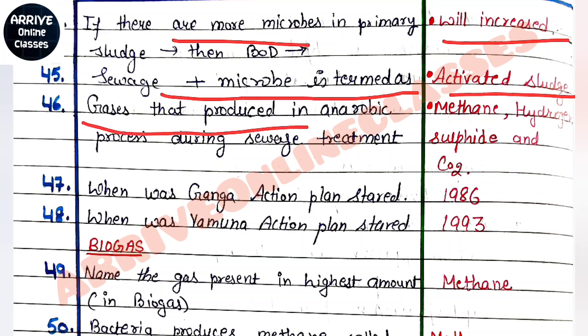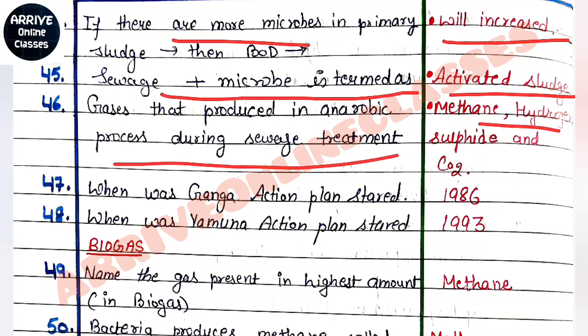Next question: what gases are produced during the anaerobic process of sewage treatment? The answer is methane, hydrogen sulfide, and CO₂.